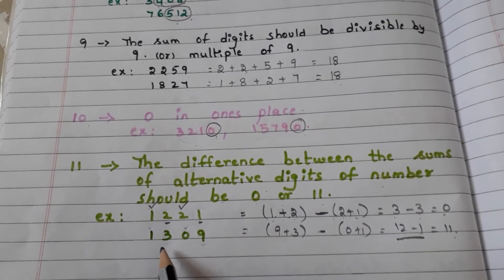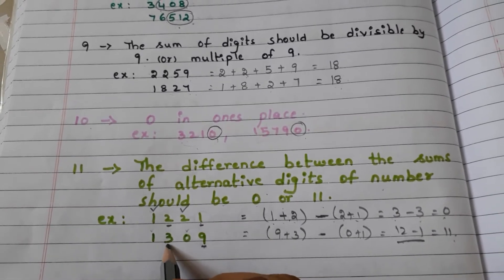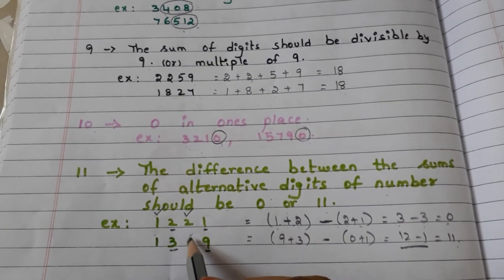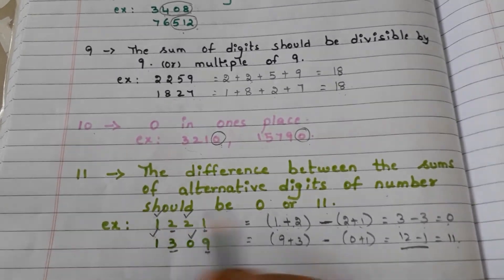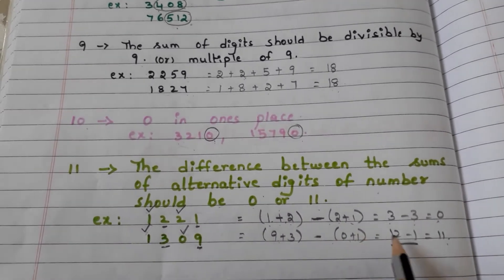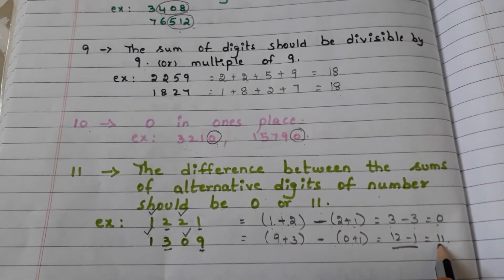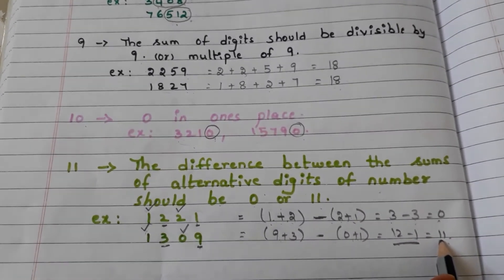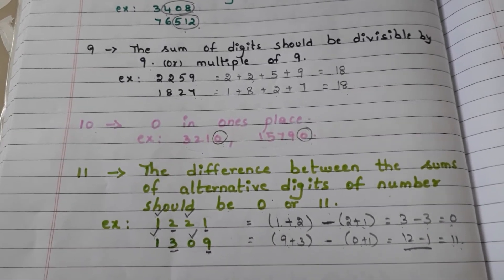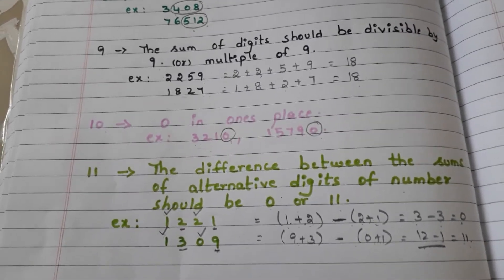Let us go to another number. Take the alternate digits: 9 and 3. Add them — 9 plus 3 is 12. The other alternate digits are 0 and 1. 0 plus 1 is 1. 12 minus 1 is 11. So, the entire number is divisible by 11. In this way, we check for the given numbers.